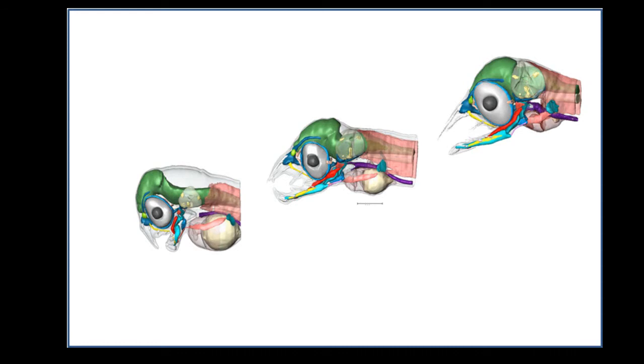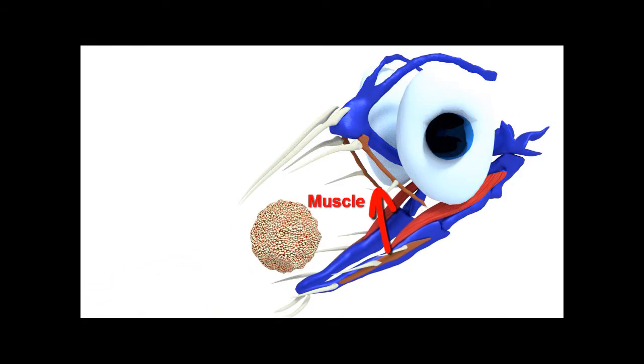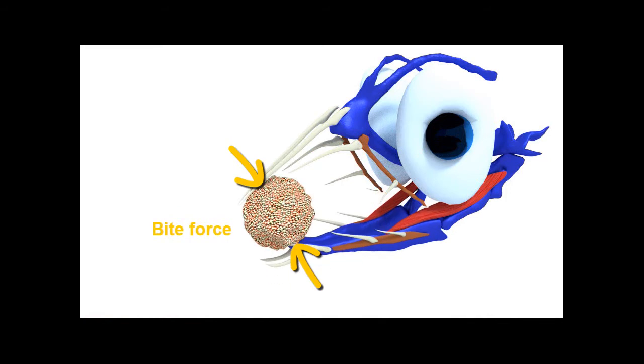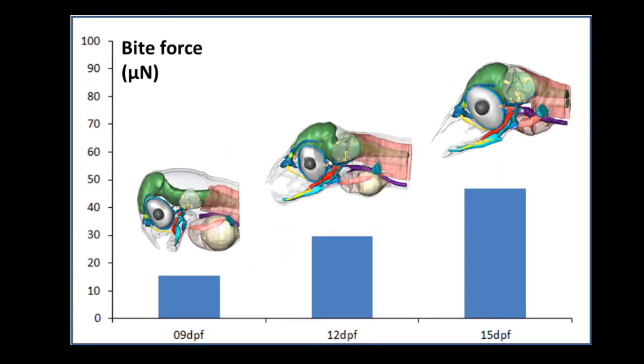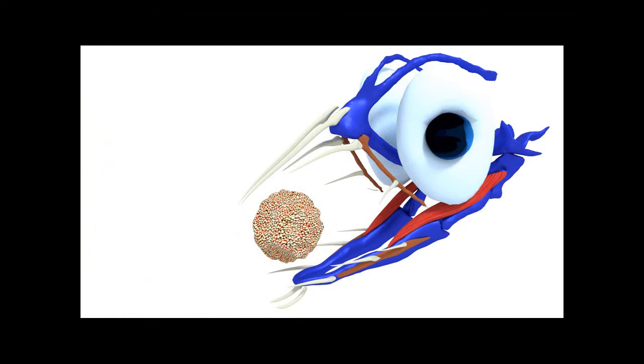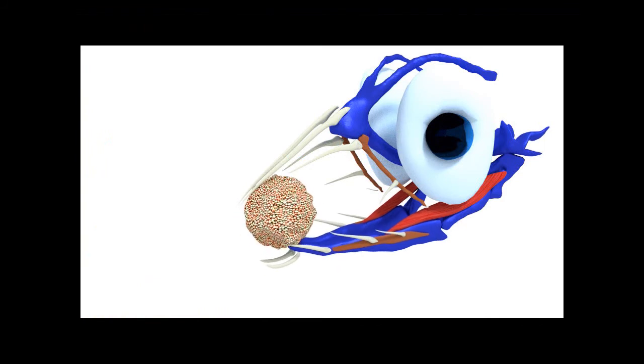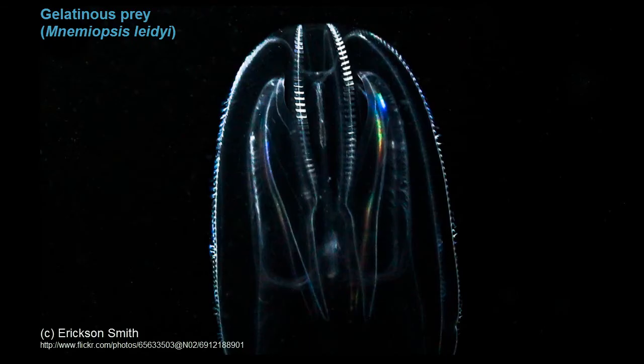Now putting all of this data into a computer model, we obtained estimates of bite force, which shows us that these larvae are only capable of producing a force of about 50 micronewtons. If you now know that a force of at least 100 micronewtons is required to break prey items that are, for example, surrounded by some sort of exoskeleton, it can be deduced that these larvae are only capable of feeding on soft gelatinous-like organisms.